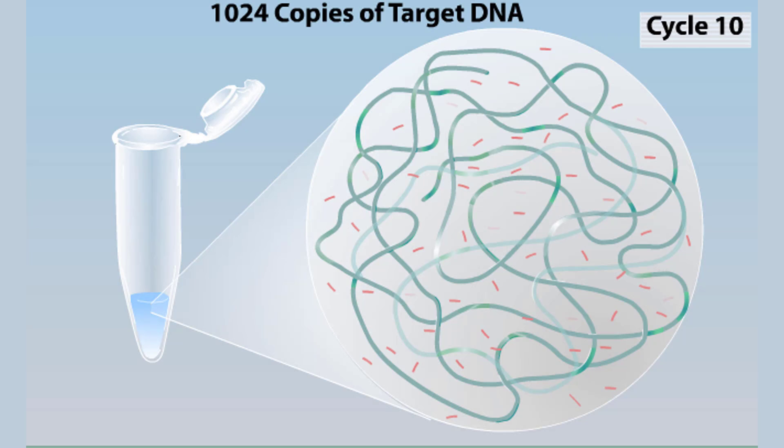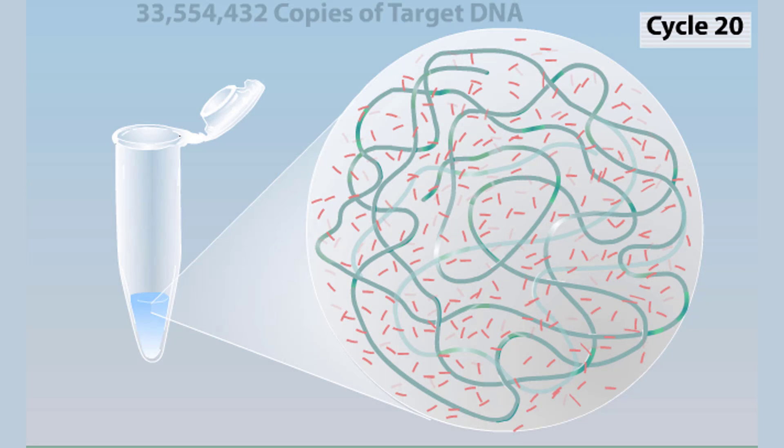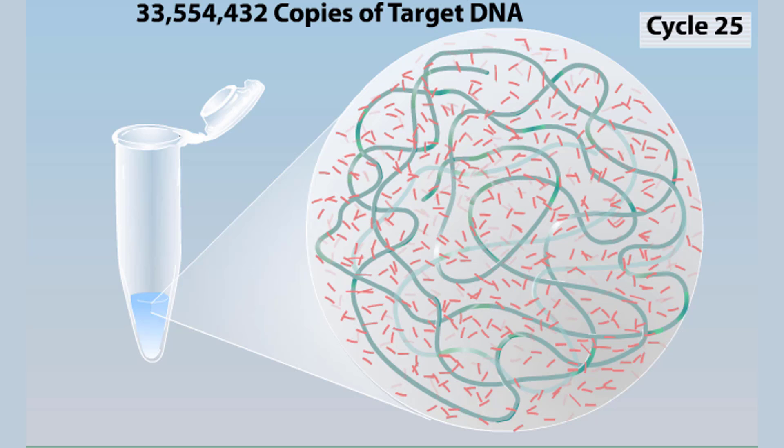With each additional cycle, the number of copies of our target sequence doubles. At the end of cycle 25, there are more than 33 million copies of this double-stranded target region.